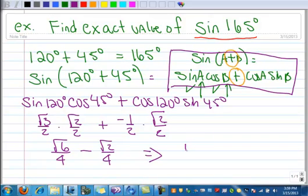So I can just write this as a single fraction: (√6 - √2)/4. And that's how we use the sine sum identity to find the exact value.